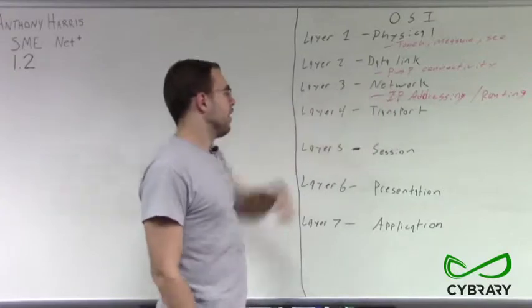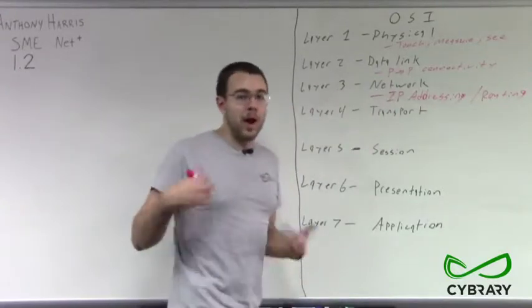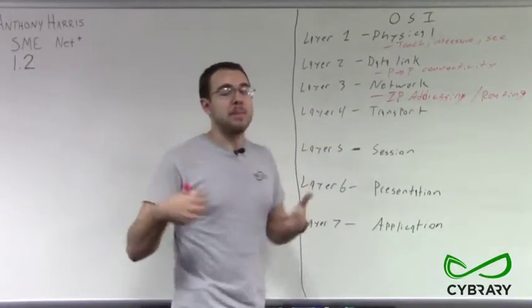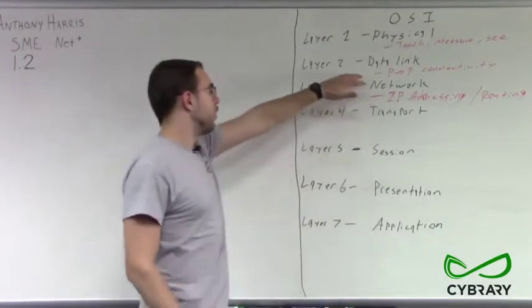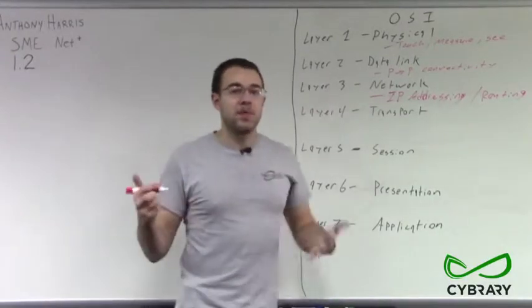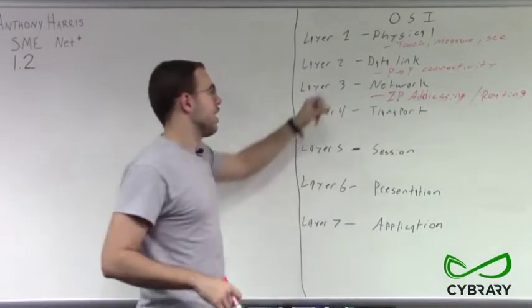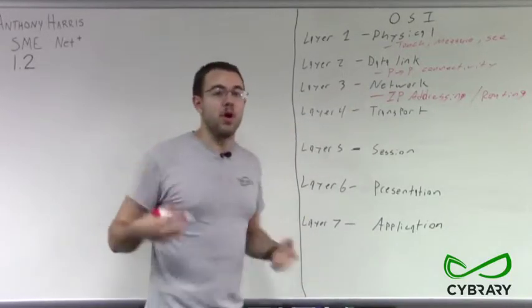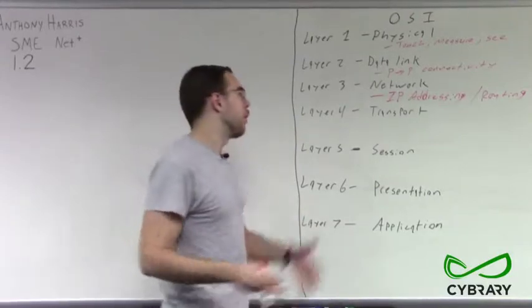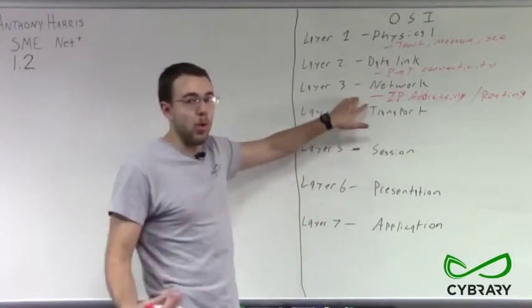Now, as opposed to our globally routed, our global unicast IPv6 addresses, which fall under layer two, because again, they provide that point to point connectivity rather than having to be routed and changed like our standard IP addresses do as they're traversing our networks, which fall under our layer three network.